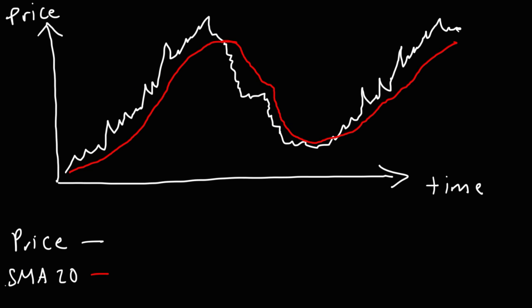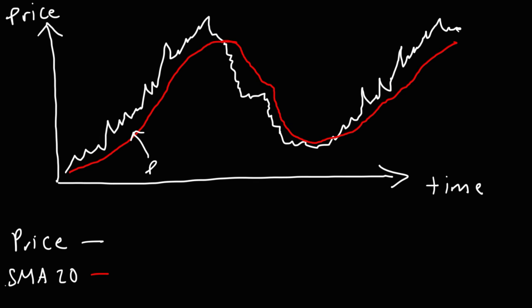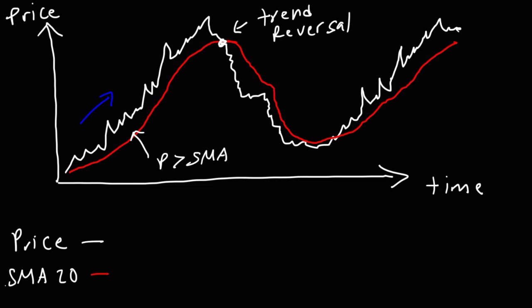In this region, the white line is above the red line, meaning the price is greater than the SMA value — so the stock is in an uptrend. Here we have a trend reversal, which occurs when the SMA curve crosses the price curve. For folks who trade stocks, they see this as a sell signal.